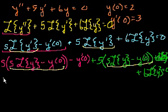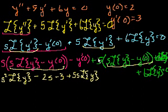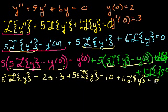But now let's simplify the math. So we get s² times the Laplace transform of y minus s times y(0). Let's substitute y(0) here. y(0) is 2. So s times y(0) is 2 times s. So 2s. So I distributed that s. Minus y'(0). y'(0) is 3. So minus 3 plus 5s times the Laplace transform of y. Minus 5 times y(0). y(0) is 2. So minus 10. Plus 6 times the Laplace transform of y. All of that is equal to 0.